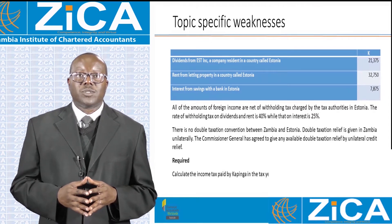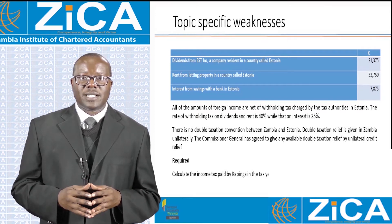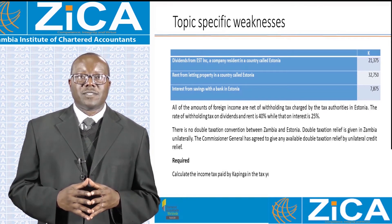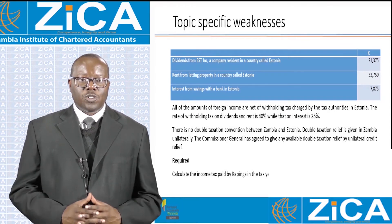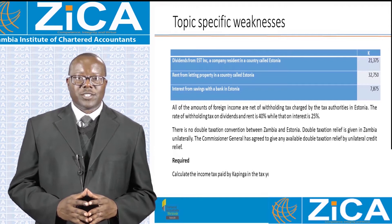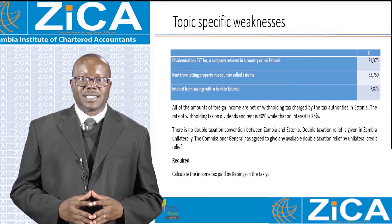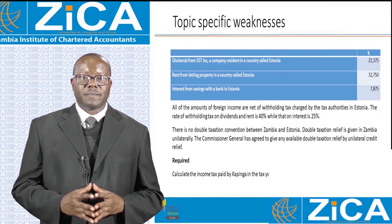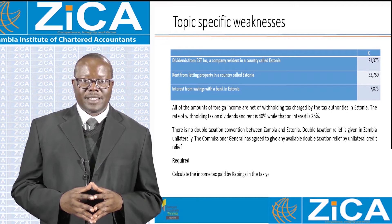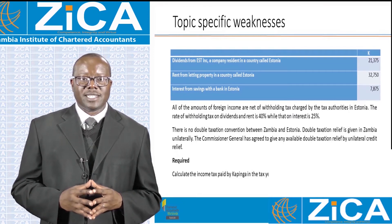Dividends from EST Inc., a company resident in a country called Estonia: 21,375 kwacha. Rent from letting property in Estonia: 32,750 kwacha. Interest from savings with a bank in Estonia: 7,875 kwacha. All amounts of foreign income are net of withholding tax charged by the tax authorities in Estonia. The rate of withholding tax on dividends and rent is 40%, while that on interest is 25%. There is no double taxation convention between Zambia and Estonia. Double taxation relief is given in Zambia unilaterally, and the Commissioner General has agreed to give any available double taxation relief by unilateral credit relief.